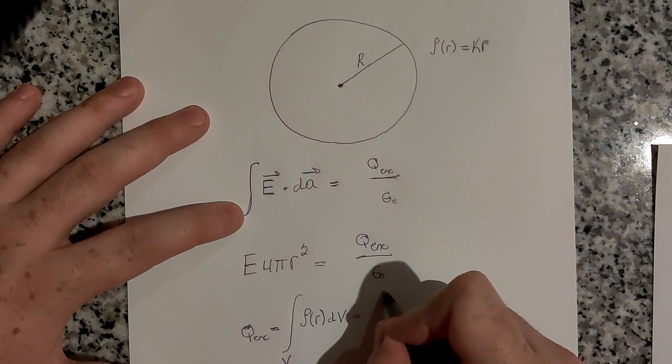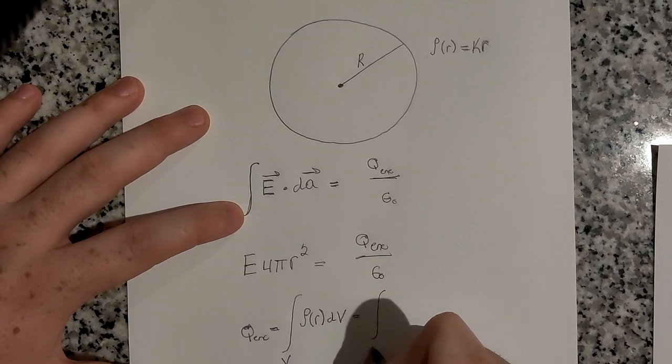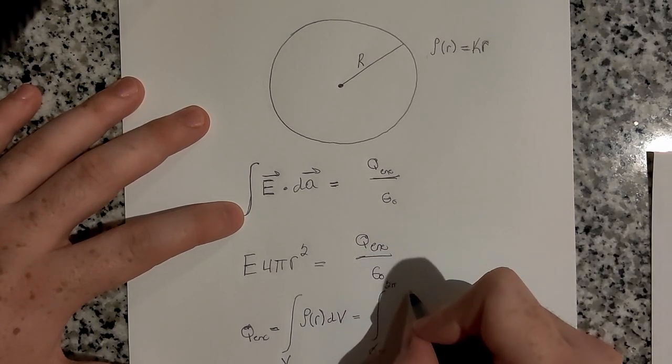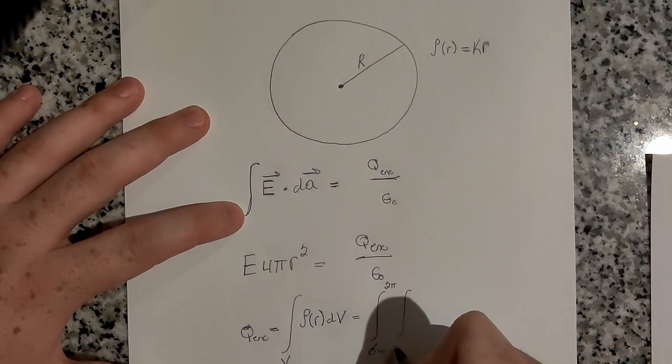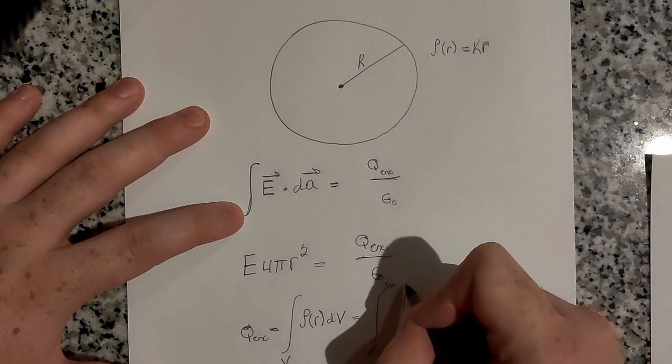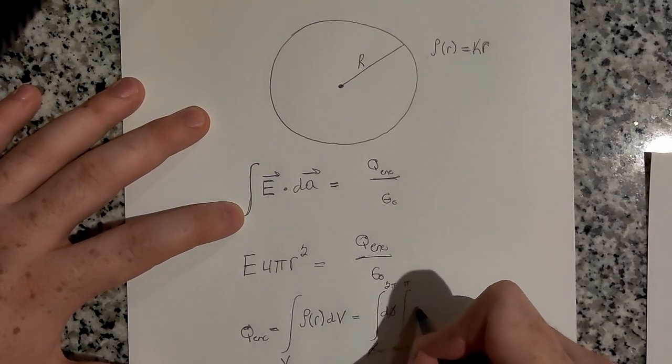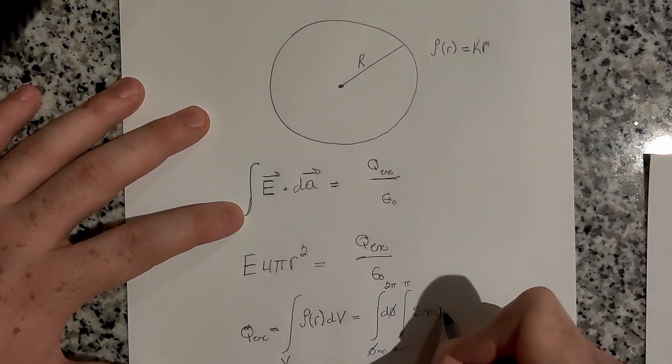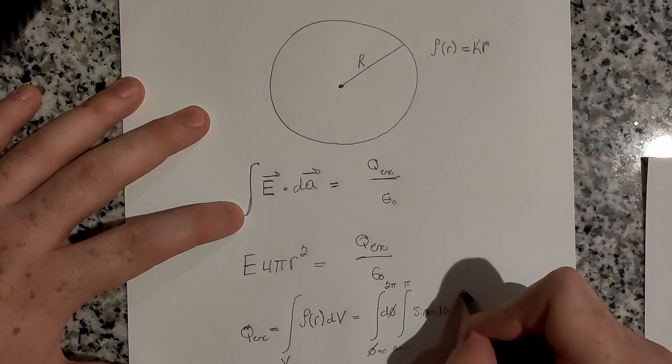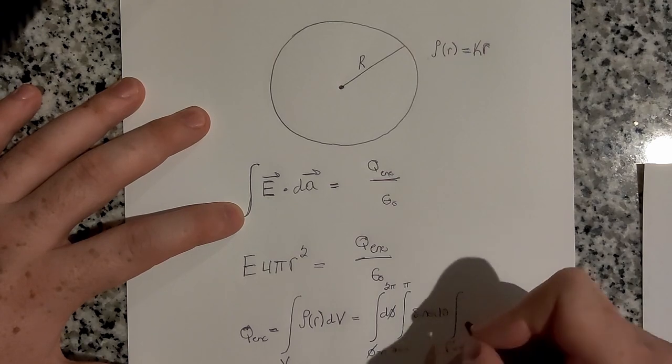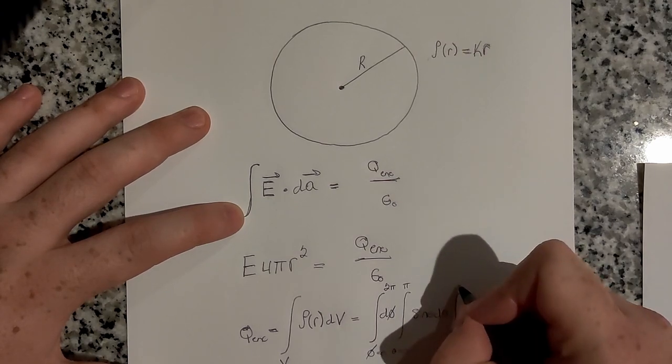So this is going to be integral from φ equals 0 to 2π. The integral for θ is equal to 0 to π. Oh, I forgot my dφ. And then this is going to be sin θ dθ. Then we have the integral from r. We'll do r prime as an integration variable. So r prime goes from 0 to r.